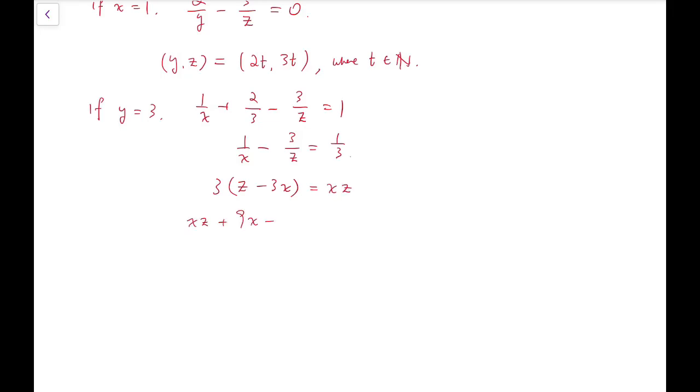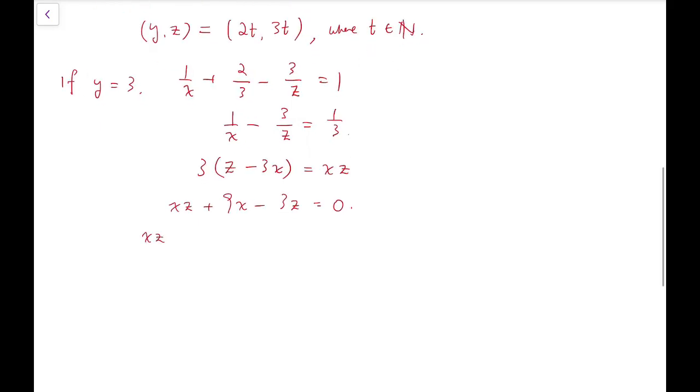Now z minus 3x times 3 equals xz. So xz plus 9x minus 3z equals 0. I'm going to add negative 27 on both sides so that the left-hand side is then factorizable.